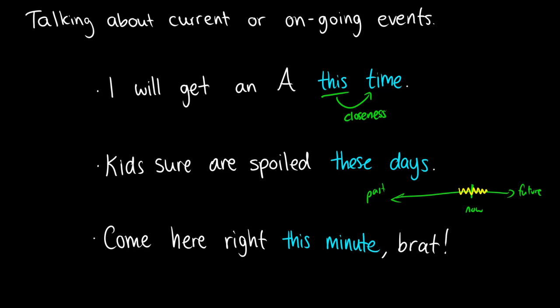If you're giving someone a command, like a kid who's done something wrong, you might say come here right this minute, brat. So of course, this minute, basically what you're trying to say here is now. So the current minute we're in, you come here, or you might even say come here right now, the second brat. So we'll use this or these for current or ongoing events. We might even use it in events that are upcoming and very close.